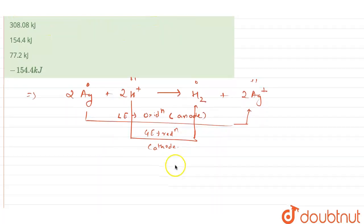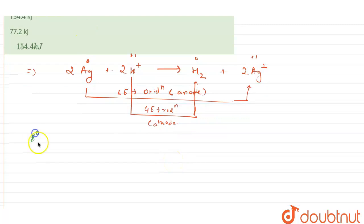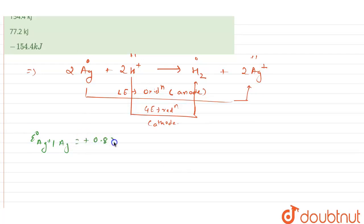So this is the conclusion which we can make from this reaction. Now, what we can do is we can write the values. E°(Ag⁺/Ag) is given as +0.8 volt. But here, the silver is going oxidation.